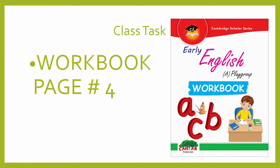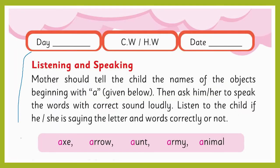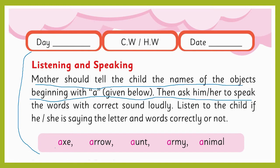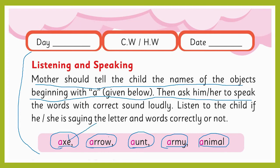अब आते हैं workbook के page number 4 के काम करने की तरफ — आप अपने workbook के page number 4 को खोलिए। यहाँ पे आपने यह काम खुद से करना है — अपने mother, sister, brother, या father की help से आपने वो words, वो objects, वो तस्वीरें ढूंढनी हैं जिनके शुरू में 'a' की आवाज़ आती है। जैसे axe यानि कुल्हाड़ी, arrow यानि तीर, aunt यानि خالہ، army یعنی فوج، animal یعنی جانور۔ انکی آپ نے گھر میں practice کرنی ہے، song بھی sing کرنا ہے، story بھی read کرنی ہے اور ان words کو بولنے کی practice بھی کرنی ہے، کیونکہ یہ سب 'a' کے friends ہیں۔